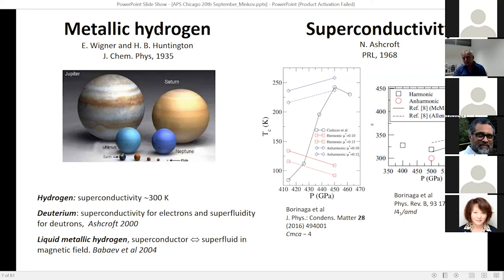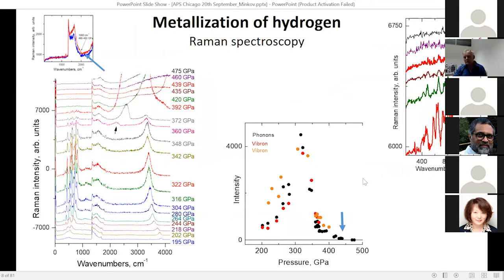High-temperature superconductivity started from a story far away — from metallic hydrogen, predicted a long time ago. This is also the main subject of our studies. The key prediction relevant here is that hydrogen could be a high-temperature superconductor — even a room-temperature superconductor — in both molecular and atomic metallic states.